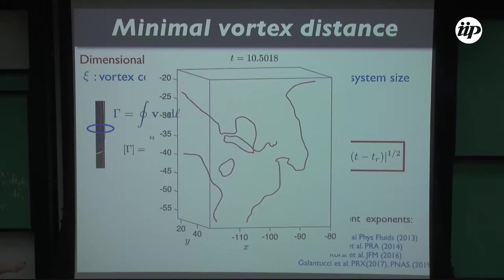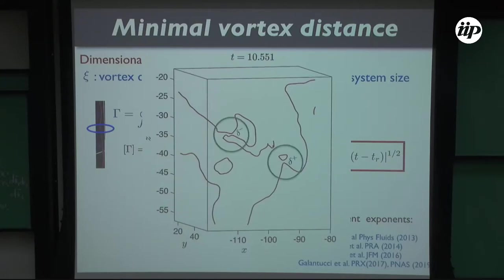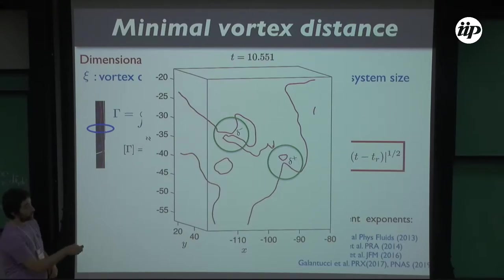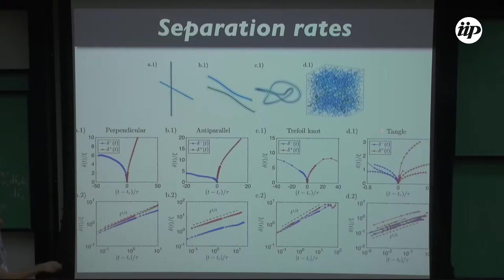There were several discussions in the literature about exponents before and after reconnection, but we all more or less agree now that it's one-half. To study this, we track the lines and sample them non-uniformly — refined close to reconnection. We define δ⁻ (distance before reconnection) and δ⁺ (after), and plot them. The result shows t^(1/2) scaling for all cases, both before (blue) and after (red) reconnection. However, there is a noticeable difference between the prefactor before and after, which is important.